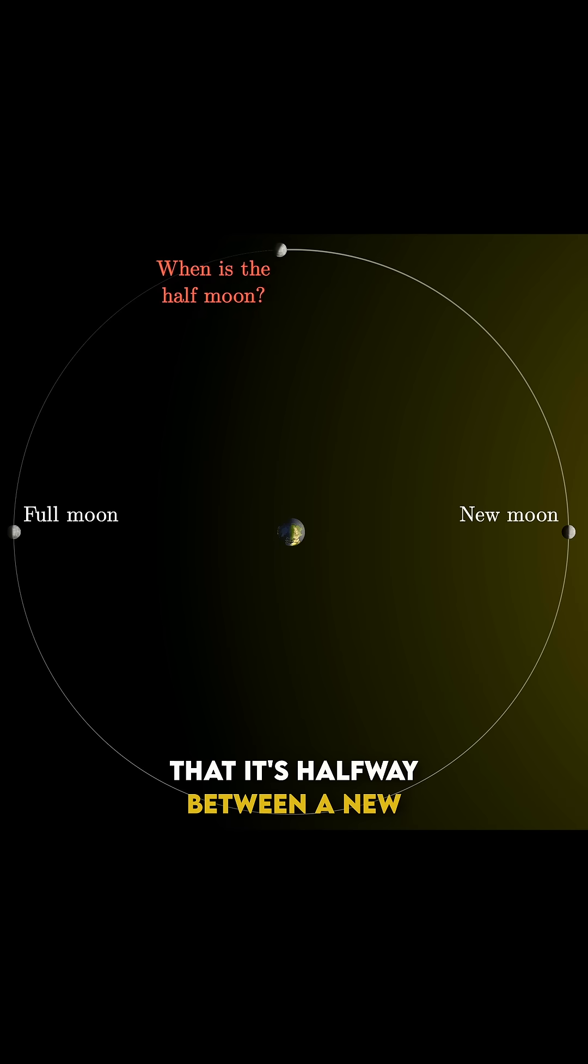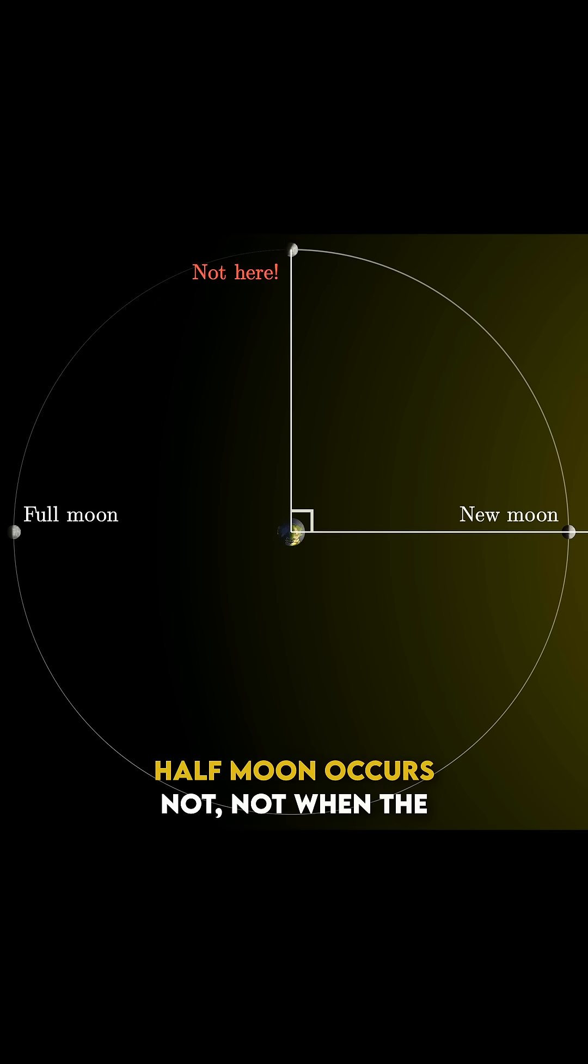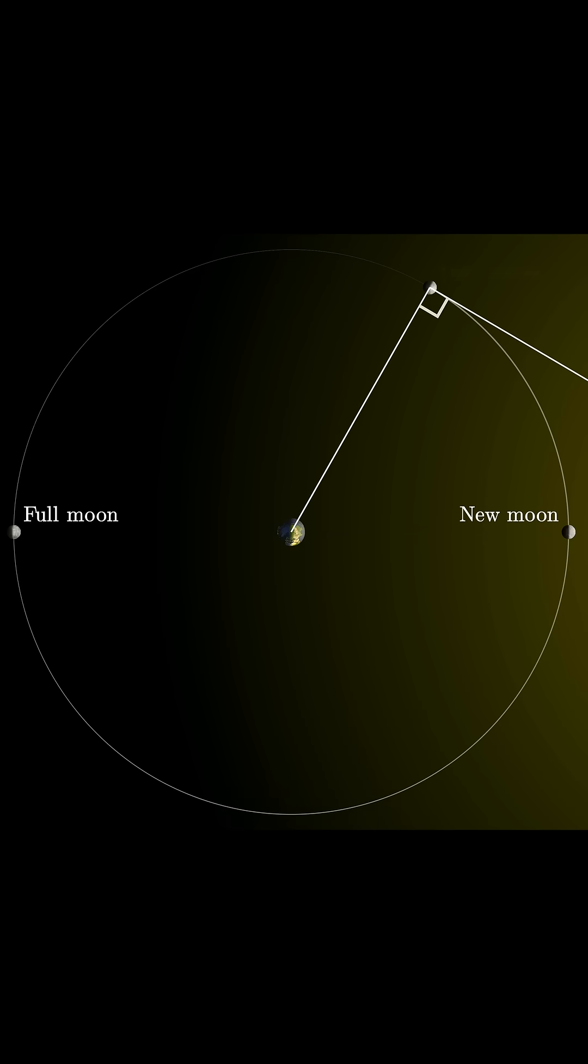From the name, you would guess that it's halfway between a new moon and a full moon, but that's actually not true. Half moon occurs not when the moon and the sun make a right angle at the Earth, but actually when the Earth and the sun make a right angle at the moon.